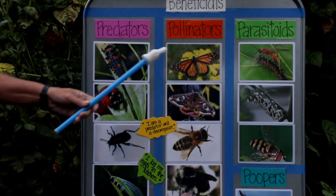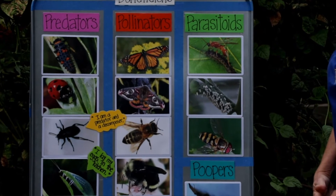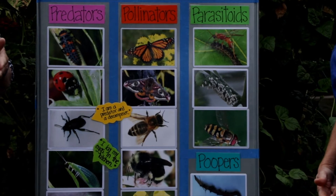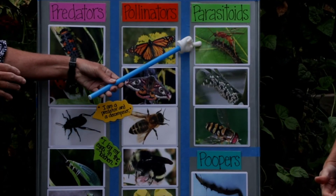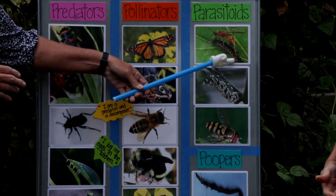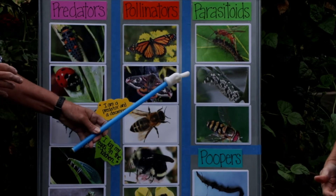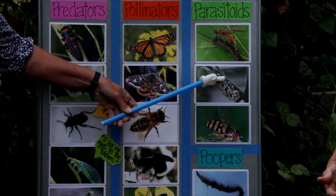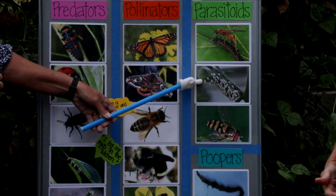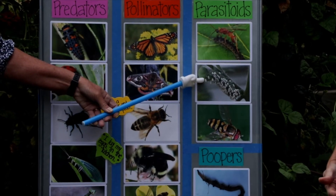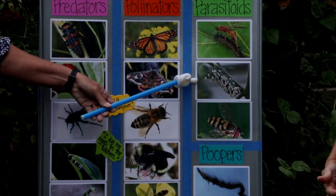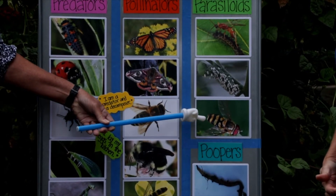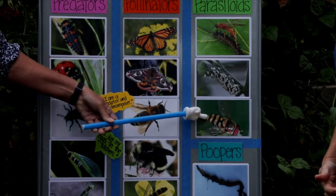Our third P is parasitoids — a fancy word meaning the beneficial insect lays its eggs in the larva of a harmful insect. At the top, we have a parasitic wasp actually depositing eggs on a caterpillar that is busy eating plants. The second picture is a hornworm on a tomato plant, and you can see all the eggs that a parasitic wasp or fly has laid on it. The eggs will hatch and dine on that caterpillar. This is a tachinid fly — they also pollinate and lay eggs on harmful insect larvae.